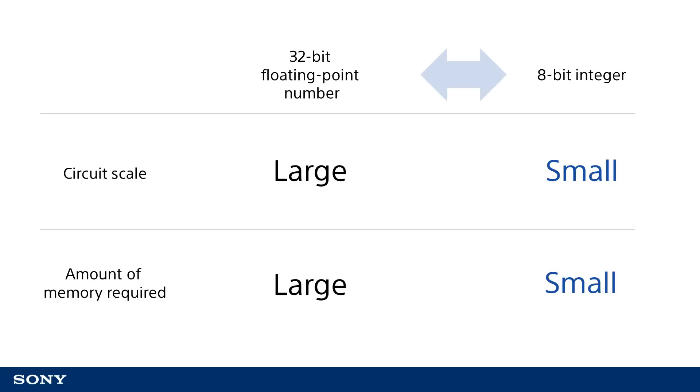If the connection weight W of neurons represented by a 32-bit floating-point number can be replaced with an 8-bit integer for example, the amount of memory required to store the weight at runtime is reduced by 75%. As such, I would like to use this video to discuss quantization as a way to reduce calculation memory and make calculations more efficient when making inferences using trained models.